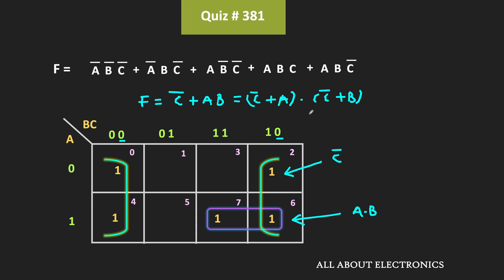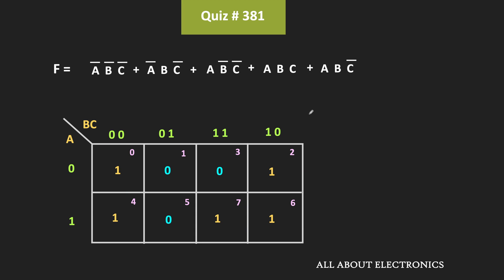So now let me show you the general procedure for converting any expression into the minimized product of sum form. Here we can put zero in those cells which are not present in this function. Now if we take the complement of this function, then it will contain those minterms which are not present in the original function. So if you see the K-map of f̄, then it will contain these three minterms.